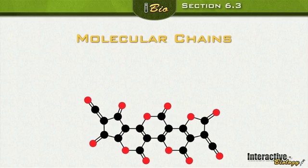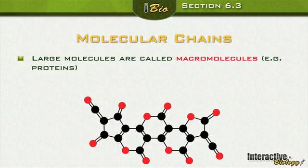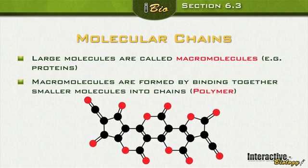Now let's talk about molecular chains. Macromolecules are large molecules — macro meaning on a large scale. An example would be proteins. A macromolecule is formed by connecting individual smaller molecules into chains, like adding links one by one to form a bigger molecule called a polymer.